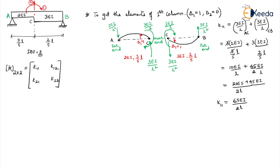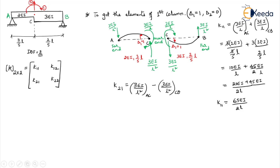Now similarly we need to find K21. What is the meaning of this? We are giving unit displacement at coordinate 1 and because of that, what is the force developed in the coordinate 2 direction? Coordinate 2 is a vertical displacement. So we sum the vertical reactions at C. The upward reaction from span AC is positive since coordinate 2 is upward. The downward reaction at C from span CB is negative. So K21 = 3EI/L² for span AC minus 3EI/L² for span CB, with different EI and L values.